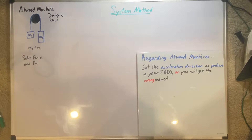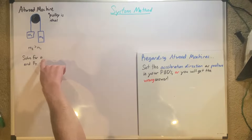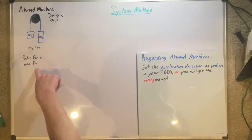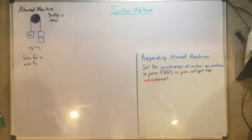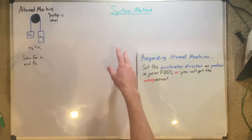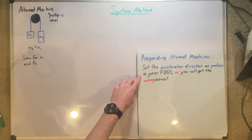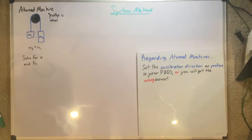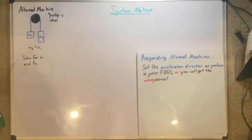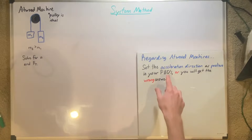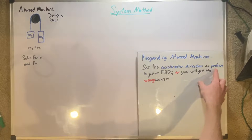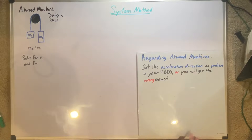First, if we wanted to solve for A — because we have to solve for A first in order to get to force of tension — we need to use our system method and then draw a free body diagram. Regarding Atwood machines, in your free body diagrams, you have to set the acceleration direction as positive, or you'll get the wrong answer. You won't get the right answer for your derivation if you don't set your positive direction the same direction as your acceleration.